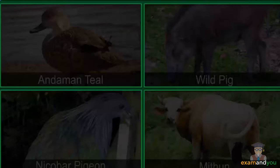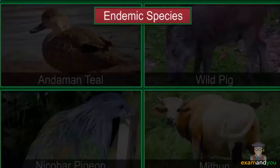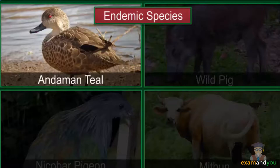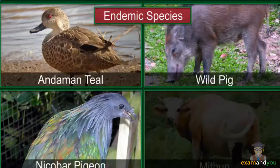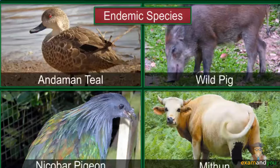A species found only in a particular region due to isolation by natural or geographic barriers is called an endemic species. Examples include the Andaman teal, the wild pig, the Nicobar pigeon, and a bovine called Mithun found in Arunachal Pradesh.